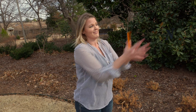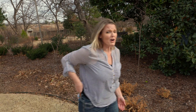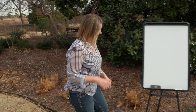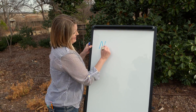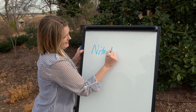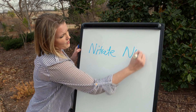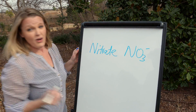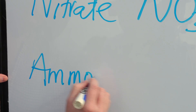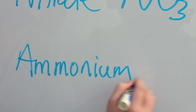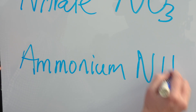It's like if I needed a writing utensil and somebody gives me an unsharpened pencil — thanks, but what good is this going to do me? Most plants need nitrogen in the form of nitrates, or NO3, or ammonium, or NH4.